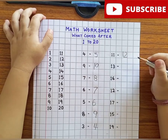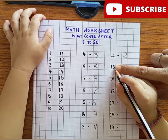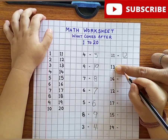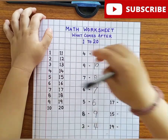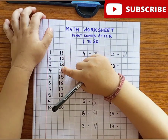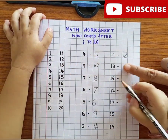Very good. Next number is? 13. What comes after 13? 14. Find number 14. Very good.